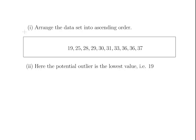There are a couple of steps to this. The first thing we will do is arrange the dataset into ascending order. So there we are: 19, 25, and so on all the way up to 37. What we are particularly interested in is seeing if the value 19 is an outlier with regards to the rest of the dataset.